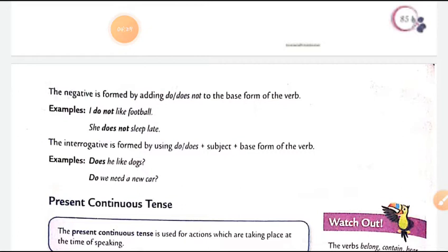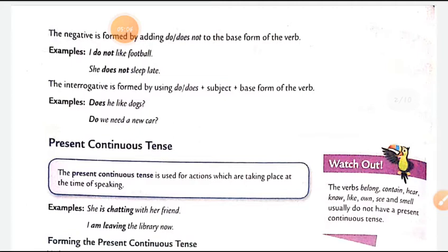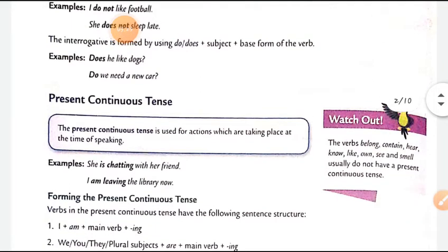The negative is formed by adding 'do/does not' to the base form of the verb. 'Do' is used with plural subjects, and 'does' is used with singular subjects. For example: 'I do not like football' — 'I' is always used as a plural subject, so we use 'do'. 'She does not sleep late' — 'she' is singular, so we use 'does'. The interrogative is formed using do/does + subject + base form, with a question mark at the end.